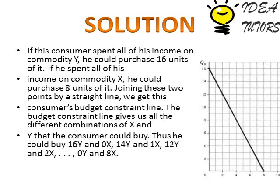These are all points on the budget line that satisfy the equation of the budget line. However, they are not the only points in the budget set. All the points on the budget line and below it toward the origin are included in the budget set, because they all satisfy the equation of the budget constraint, which is different from the equation of the budget line.